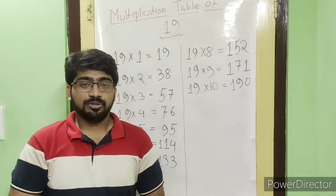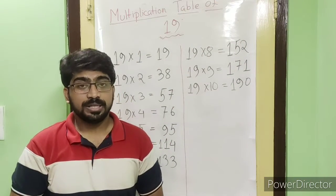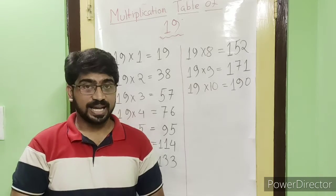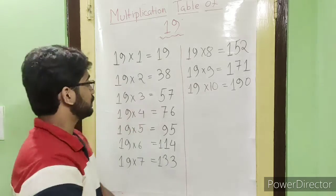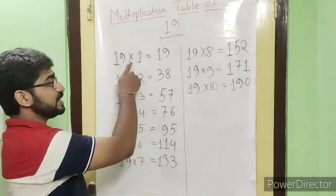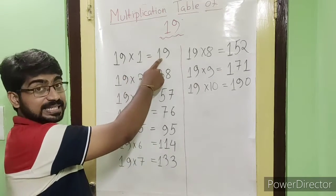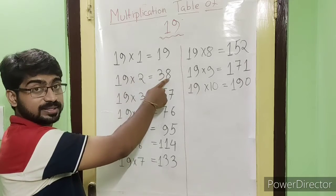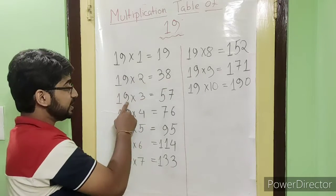Jai Gurudev. So now we will learn the multiplication table of 19. 19 ones are 19, 19 twos are 38.